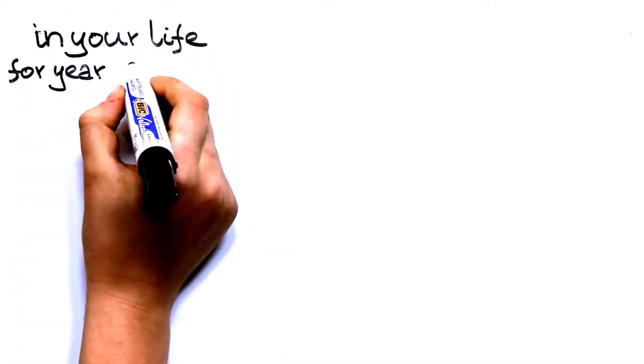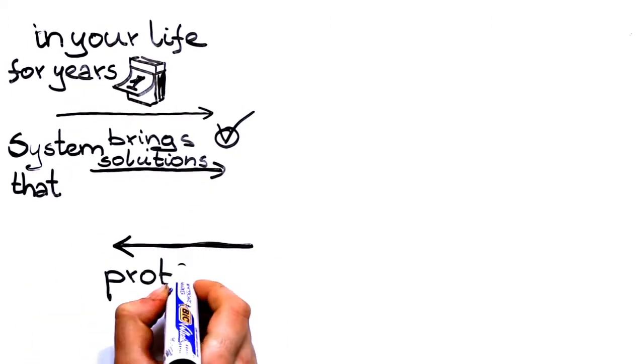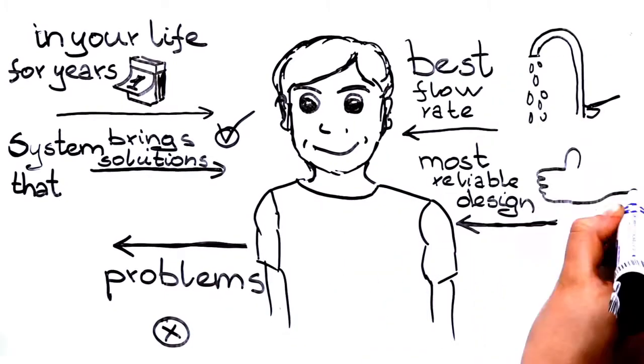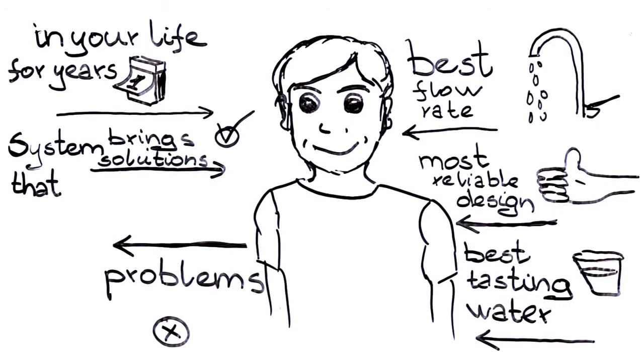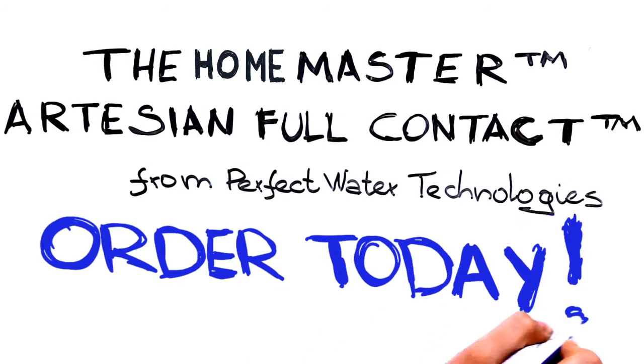Conclusion. Your RO system will be in your life for years. So get the RO system that brings solutions, not problems. Get the one with the best flow rate, the most reliable design, and the one with best-tasting mineral water on tap. The Home Master Artesian Full Contact from Perfect Water Technologies. Order today!